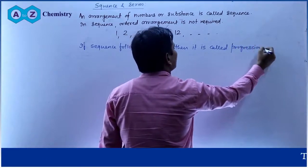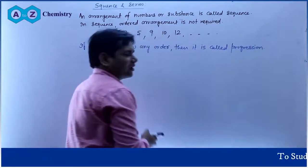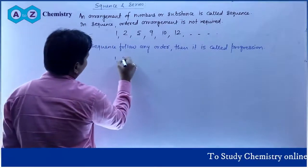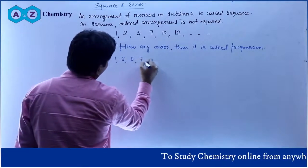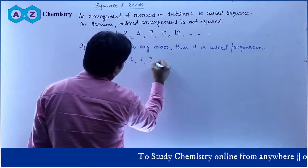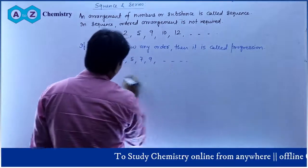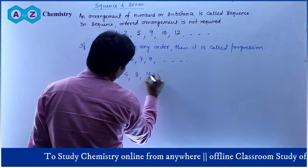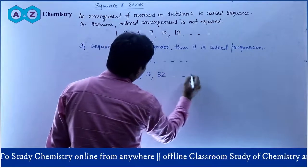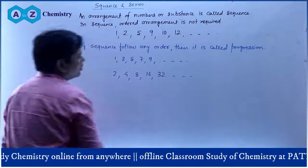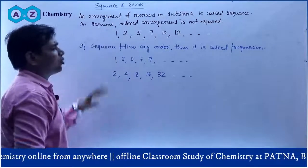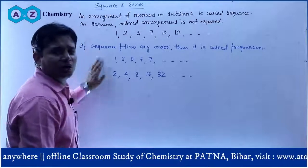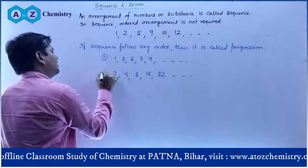That is when you call it a Progression. For example, if you take 1, 3, 5, 7, 9 — or 2, 4, 8, 16, 32 — you can see these are all Progressions, because in all of them some definite rules are being followed.